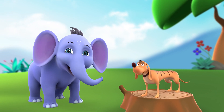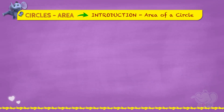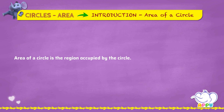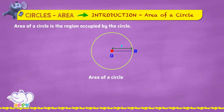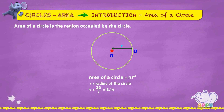Today we're going to learn about the area of circles. The area of a circle is the region occupied by the circle. It can be determined using the formula: Area of a circle equals pi r squared, where r is the radius of the circle and pi equals 22/7 or 3.14. The unit of area is square meters, square centimeters, etc.